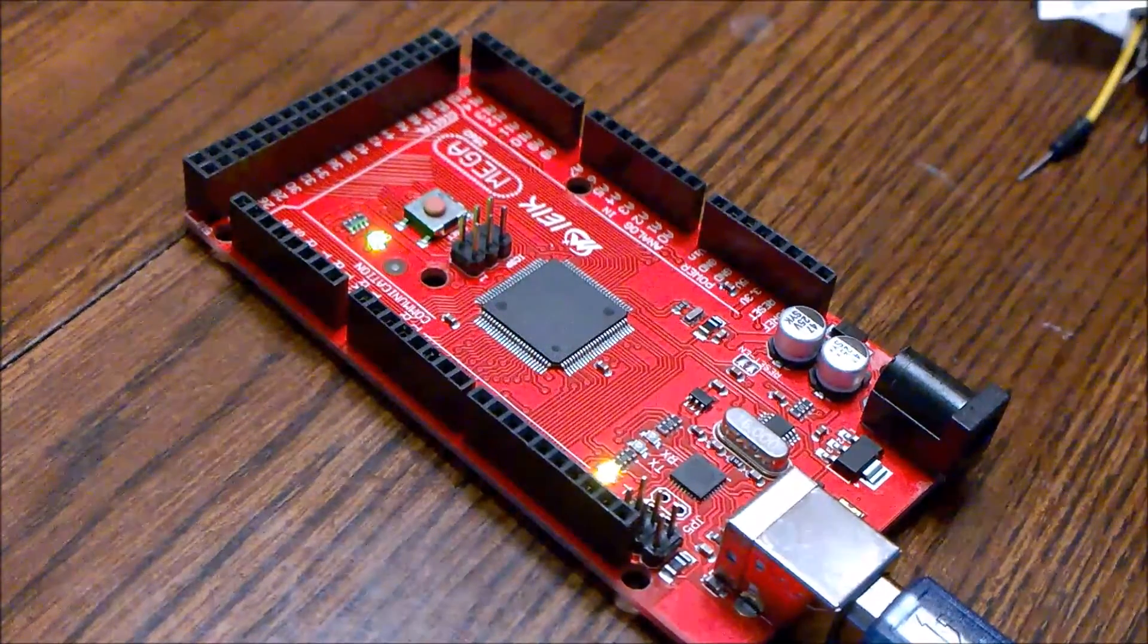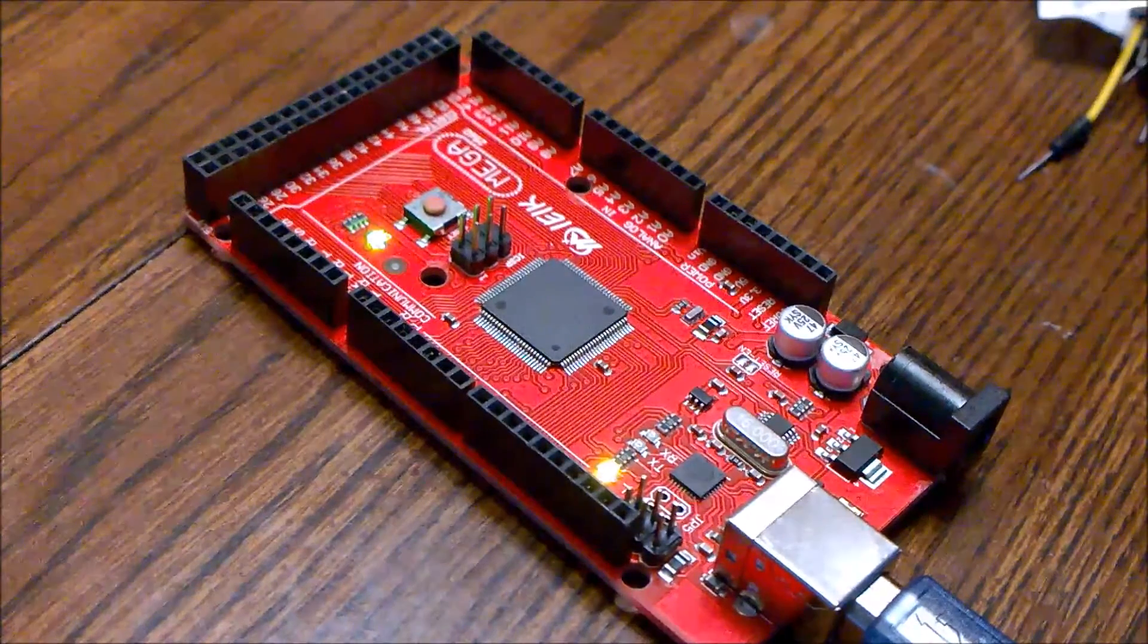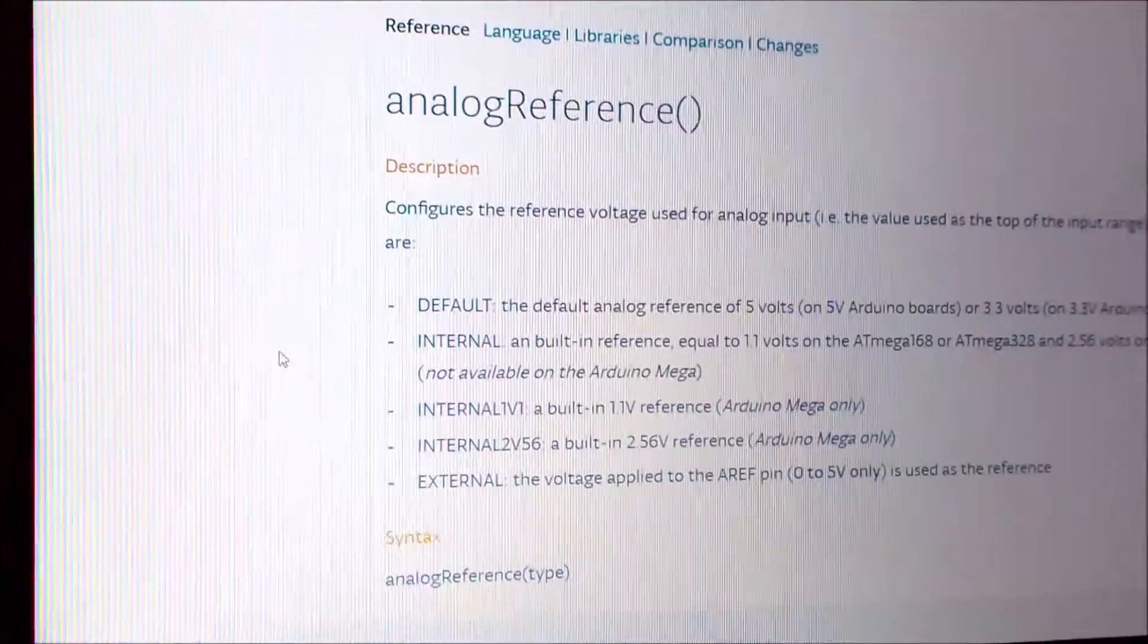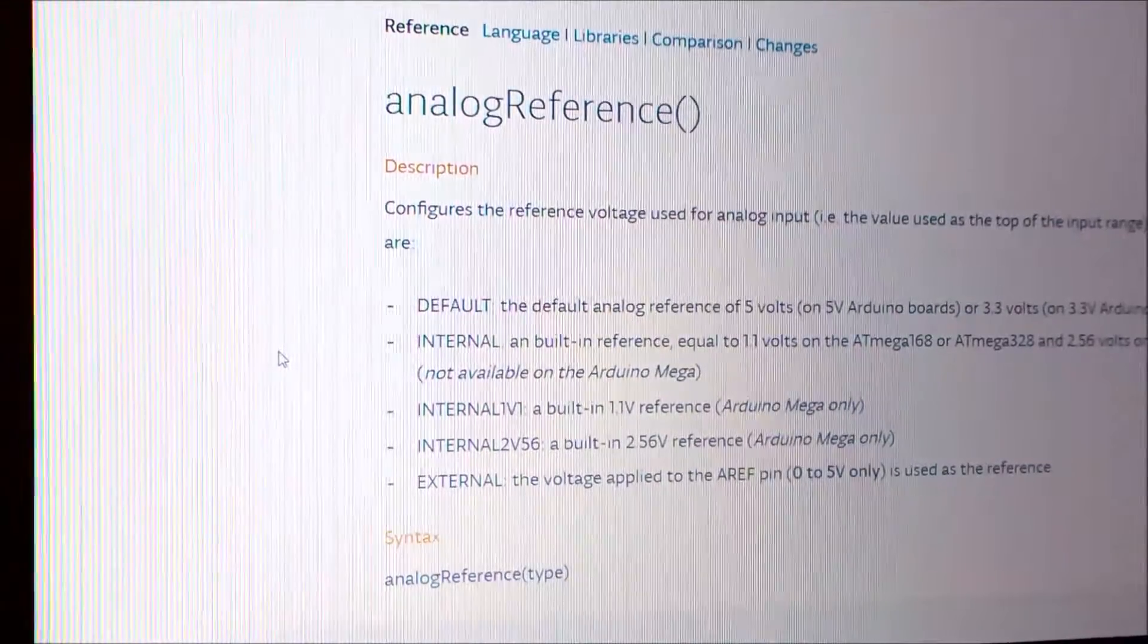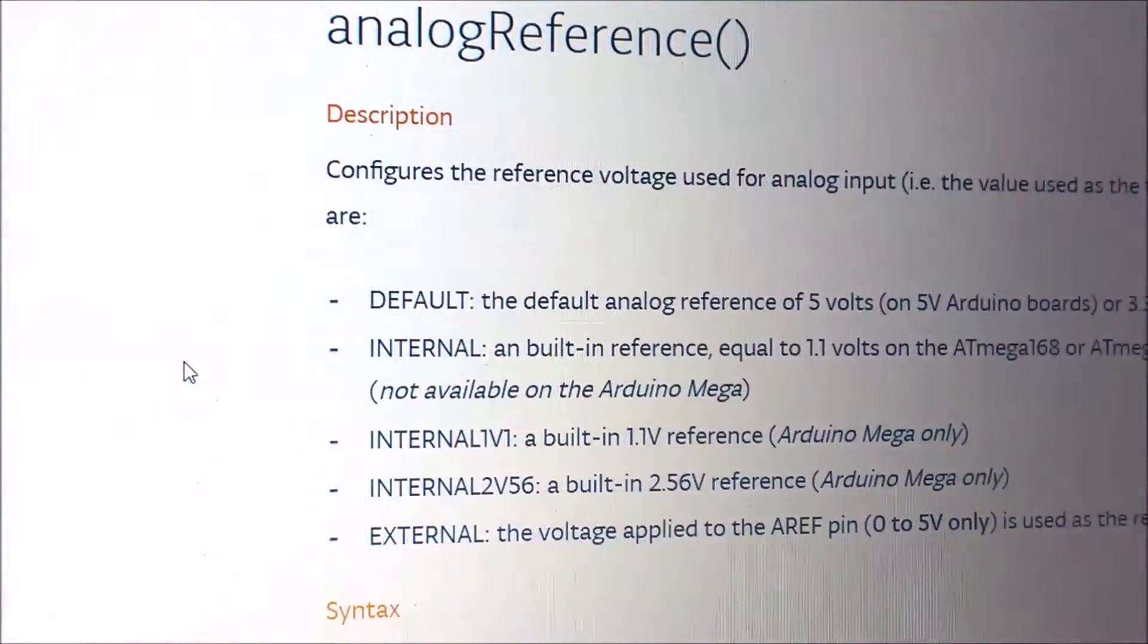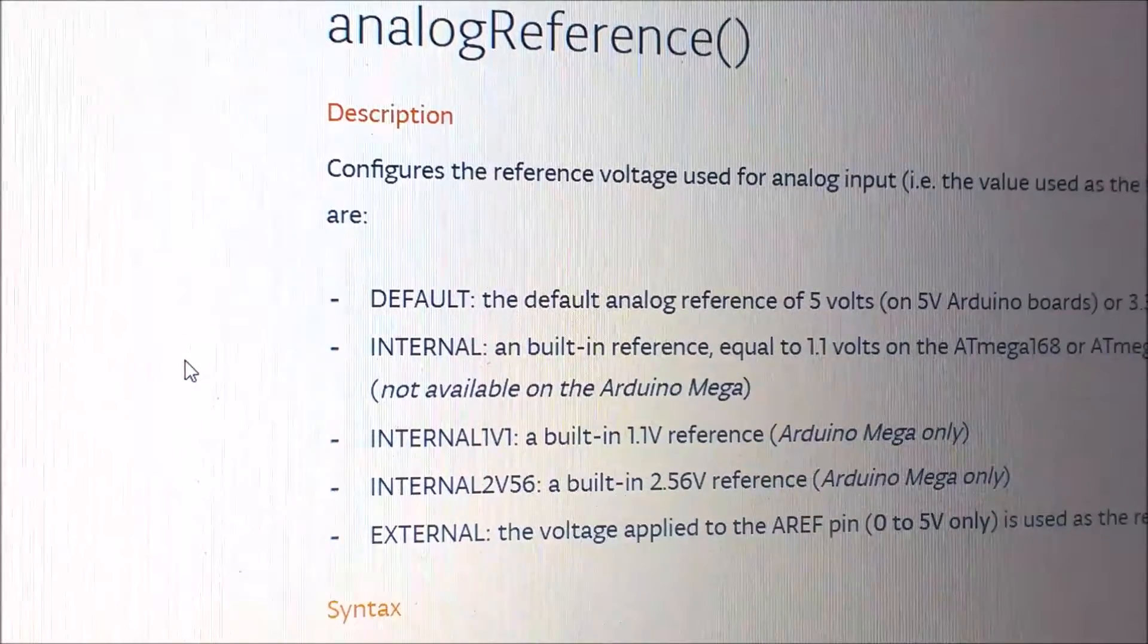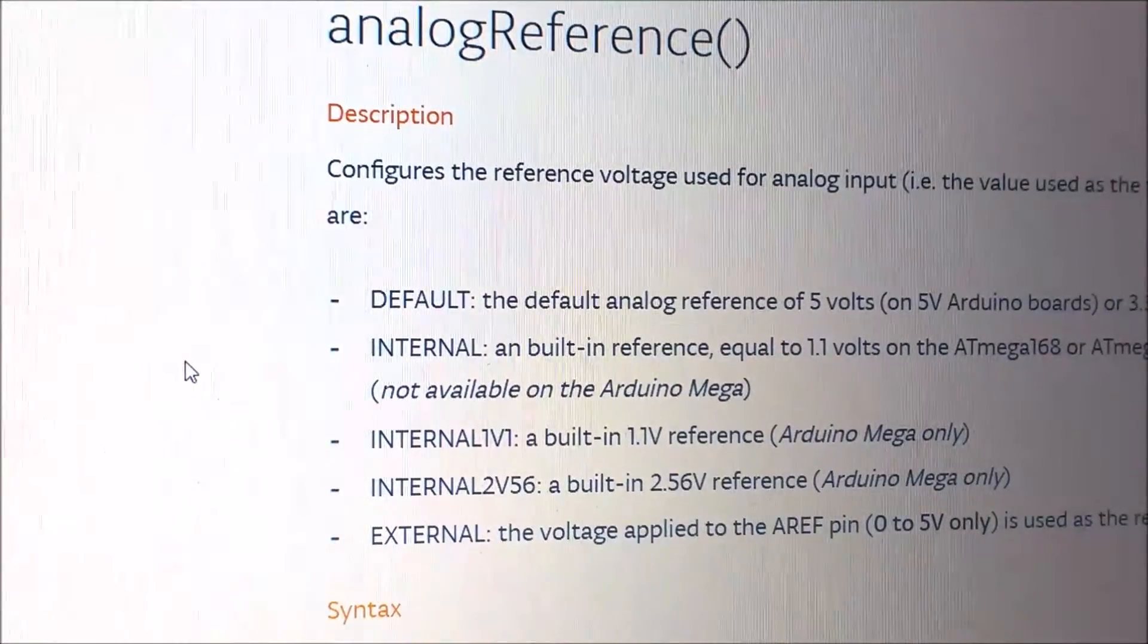Hi, today we are going to see how to use internal voltage reference for Arduino Mega. Here is my Mega board connected with computer. If you go to the Arduino website, you can see for Mega there are INTERNAL1V1 and INTERNAL2V56. These are the two commands for selecting internal 1.1 volt and 2.56 volt reference voltages.